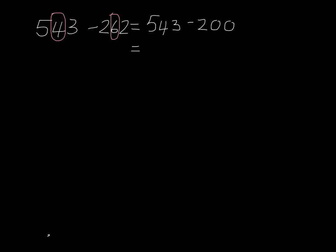And our answer for that is, well I know that 500 take away 200 is 300, so therefore I know that 543 take away 200 is 343.